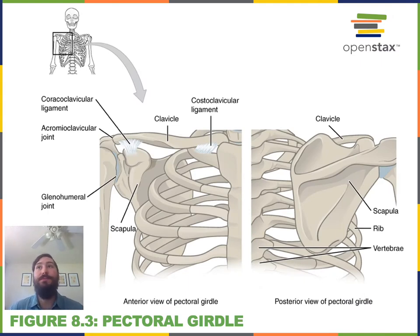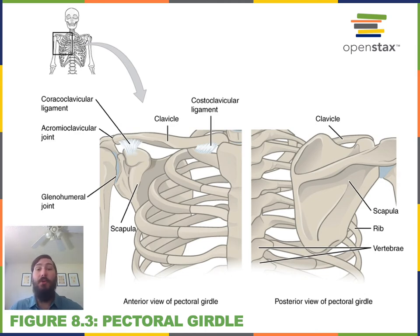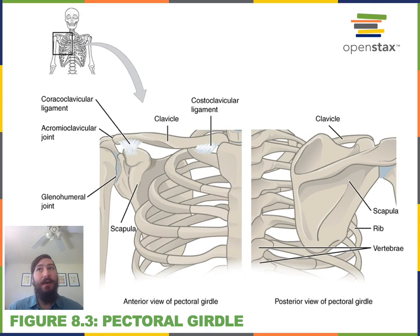The pectoral girdle includes the clavicle and the scapula. The clavicle, commonly known as the collarbone, is a medium-sized flat bone located on the anterior acromial region, and the clavicle contacts the sternum to form the only joint between the upper limb and the axial skeleton. The clavicle also contacts the scapula. The scapula, commonly known as the shoulder blade, is the large flat triangular-shaped bone located on the posterior of the acromial region, and the scapula contacts the humerus to form the glenohumeral joint, or the shoulder joint.